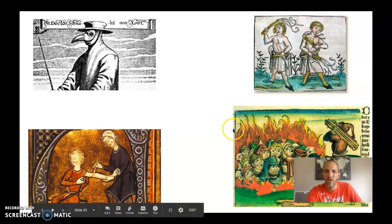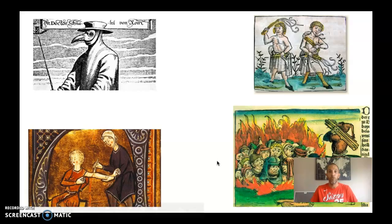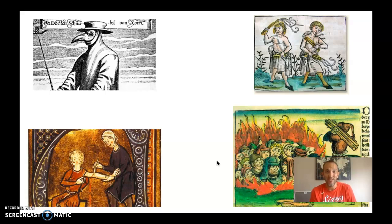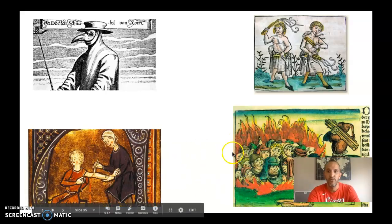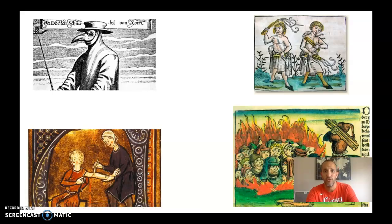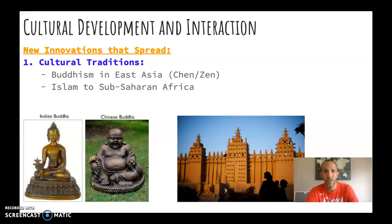Many towns in Western Europe also blamed Jewish people for causing the plague, claiming they were poisoning Christian wells — even though Jewish people were dying at the same rate as Christians. Towns would go in and kill all the Jewish inhabitants. None of these responses were correct. The plague was mostly spread by fleas jumping from one host to another.